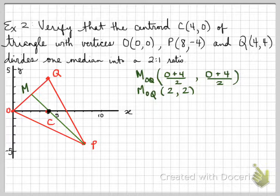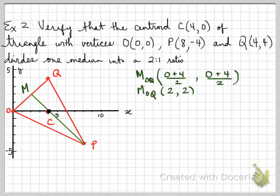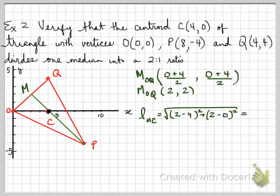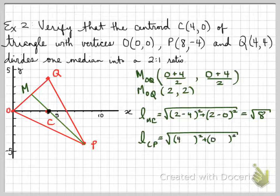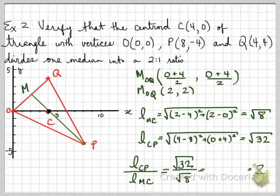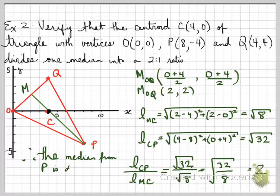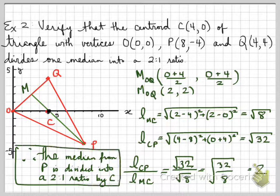Now we need to know that the centroid actually divides this median into a ratio of 2 to 1. That means that CP should be twice as long as MC. Well, hopefully you're thinking, let's find the length of MC. Let's find the length of CP. Length of MC is the following. Length of CP is the following. And then you want to take CP and divide by MC. So the median from P is divided into a ratio of 2 to 1 by C. That means CP is twice as long as MC.